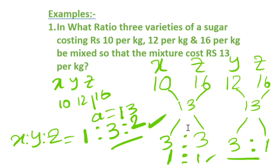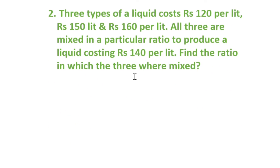So in this example the average price lay between y and z, so we took two different allegations and found the ratio x:y:z. Just like in the two-variable problems where we got a required ratio at the end, here also we follow the same approach with three ingredients. Now let's see the second example.